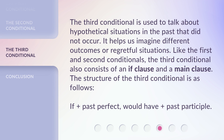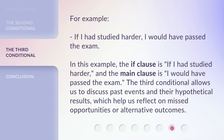The third conditional is used to talk about hypothetical situations in the past that did not occur. It helps us imagine different outcomes or regretful situations. Like the first and second conditionals, the third conditional also consists of an IF clause and a main clause. The third conditional allows us to discuss past events and their hypothetical results, which help us reflect on missed opportunities or alternative outcomes.